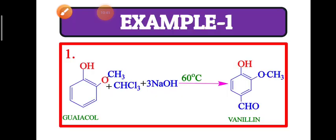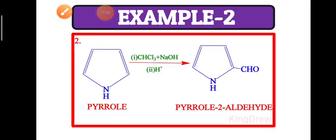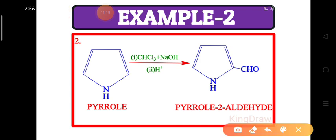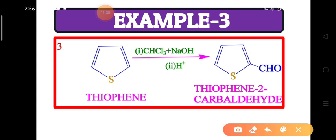Now for some examples of the Reimer-Tiemann reaction. Guaiacol forms vanillin as the end product, which is used in cold creams. Some heterocyclic compounds also undergo the Reimer-Tiemann reaction. Pyrrole forms pyrrole-2-carbaldehyde, and thiophene also undergoes Reimer-Tiemann reaction to form thiophene-2-carbaldehyde.